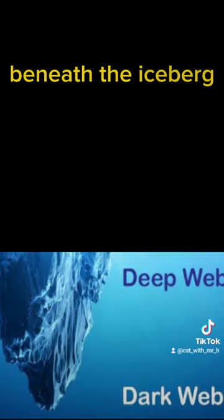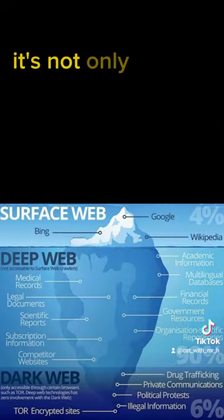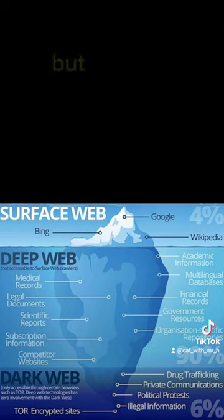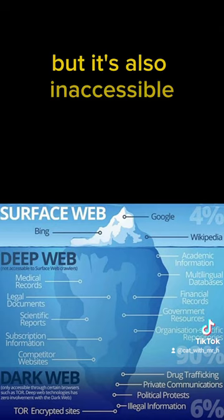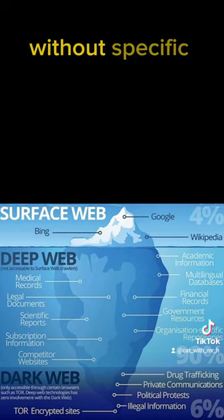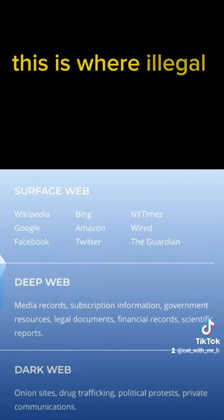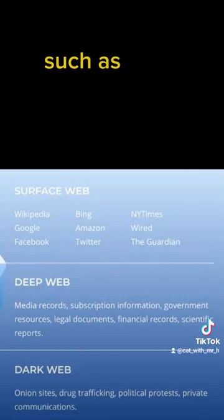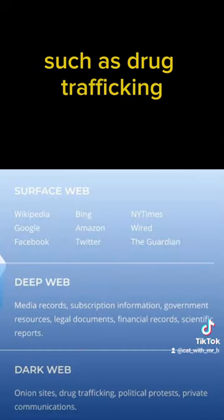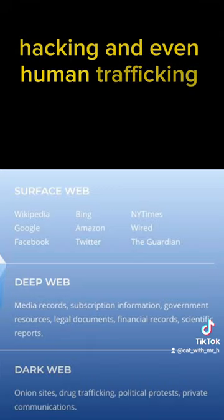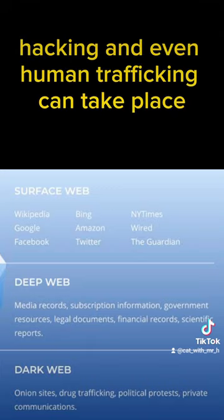But the dark web is like a hidden cave beneath the iceberg. It's not only hidden from plain sight but also inaccessible without specific software or knowledge. This is where illegal activities such as drug trafficking, hacking, and even human trafficking can take place.